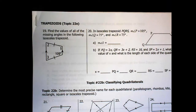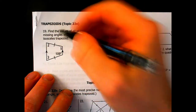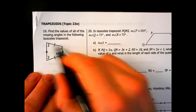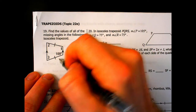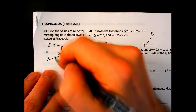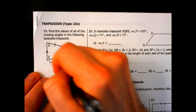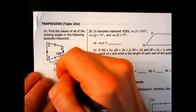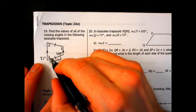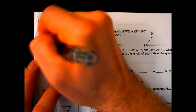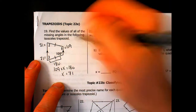For questions 19 and 20, we're working with trapezoids. For number 19, find the values of all the missing angles in the following isosceles trapezoid. The two base angles are congruent, and this trapezoid is flipped sideways so the bases are vertical. The leg angles are supplementary, so 109 plus angle 3 equals 180, giving angle 3 equals 71. Because angle 3 and angle 2 are base angles, angle 2 is also 71. And angle 1 and 109 are base angles, so angle 1 is 109.